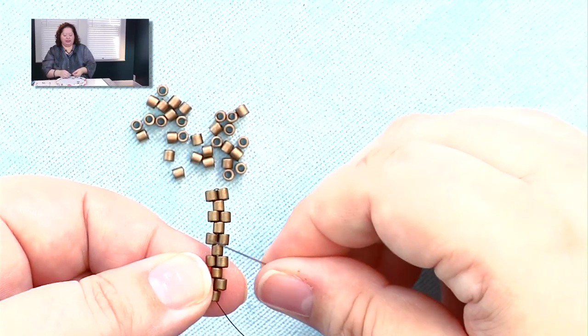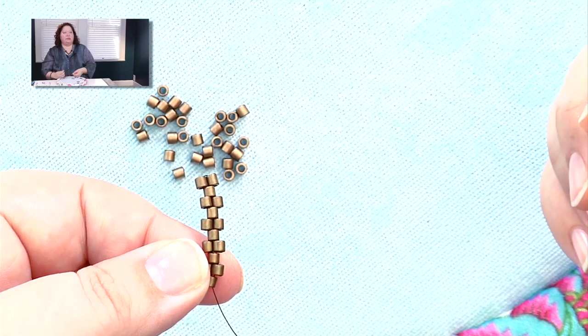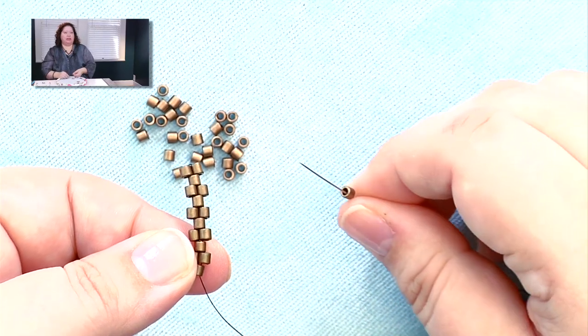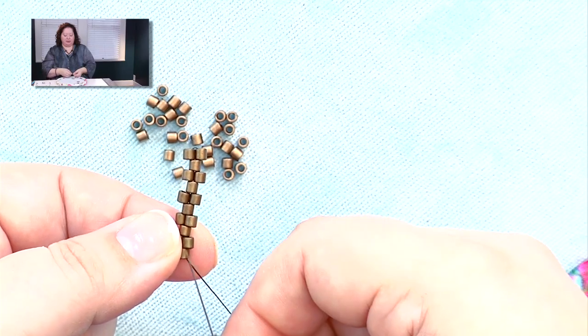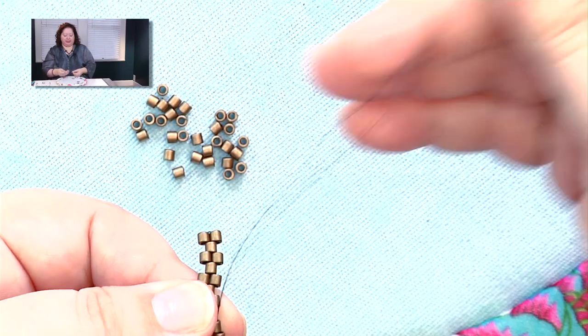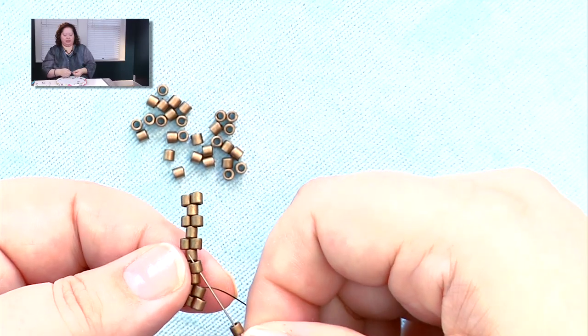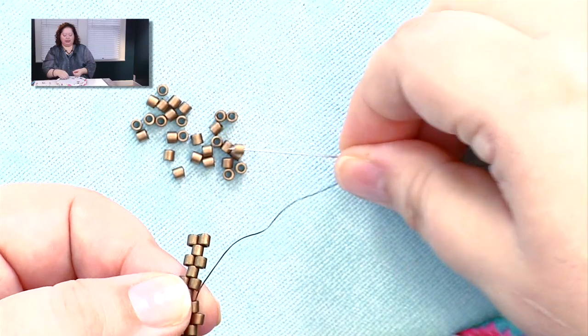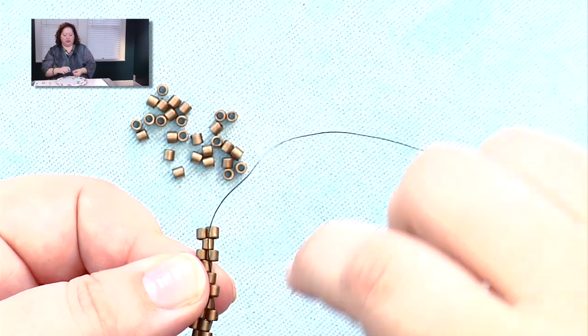But now we've got little indentations, these spaces between the sticky-outy beads, and those are going to be the spaces where our new beads are going to sit. So once you've got that first row established, peyote is super easy, and that's why people love it. I'm picking up a bead, I'm just passing through the next sticky-uppy. Pick up a bead, pass through the next one, sticking out there. And yes, sticky-outy is a highly technical term, but everybody knows what I'm talking about.